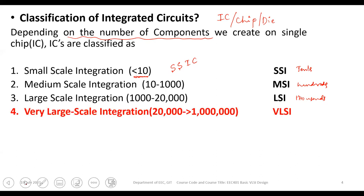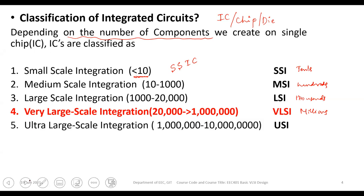The fourth type is Very Large Scale Integration, or VLSI, where millions of transistors can be realized in a given small area. After that comes Ultra Large Scale Integration, or ULSI, where billions of transistors are accommodated on a chip.